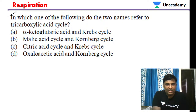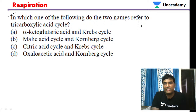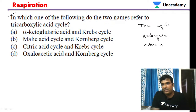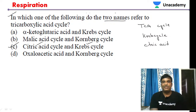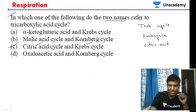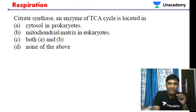MCQ: Which two names refer to the tricarboxylic acid cycle? The TCA cycle is also called the Krebs cycle, because Sir Hans Krebs was the scientist who first identified it, and it is also called the citric acid cycle. So the correct option contains both citric acid cycle and Krebs cycle — that is option C.